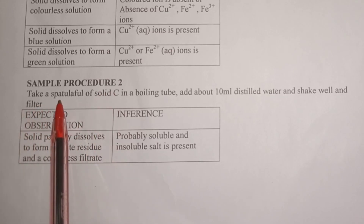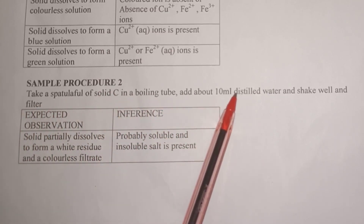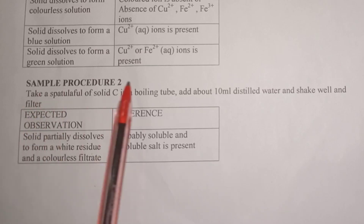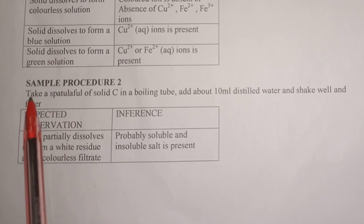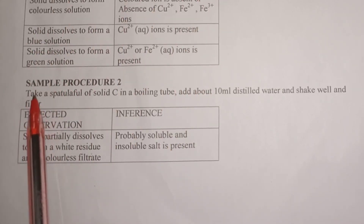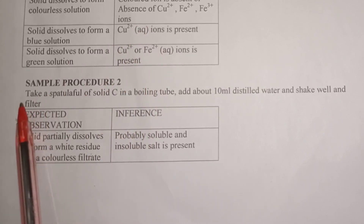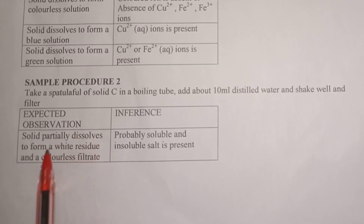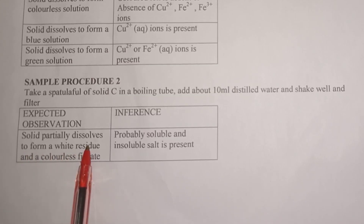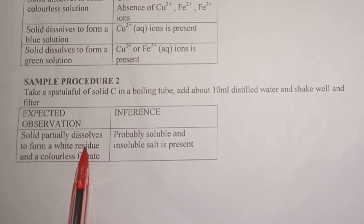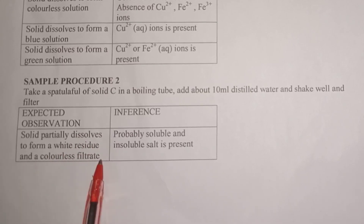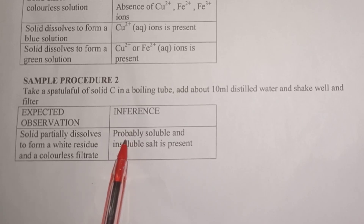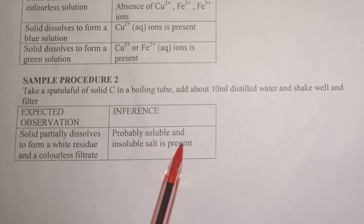Sample procedure 2: take a spatula full of solid C in a boiling tube, add about 10 ml of distilled water, shake well, and filter. When told to filter, it means the salt is made up of two salts — one soluble and one insoluble. The insoluble will form a residue while the soluble will form a filtrate. The expected observation is: solid partially dissolves in distilled water to form a white residue (or black residue — write what you see) and a colorless filtrate. If the filtrate is blue, write a blue filtrate; if green, a green filtrate. The inference is probably soluble and insoluble salt present.